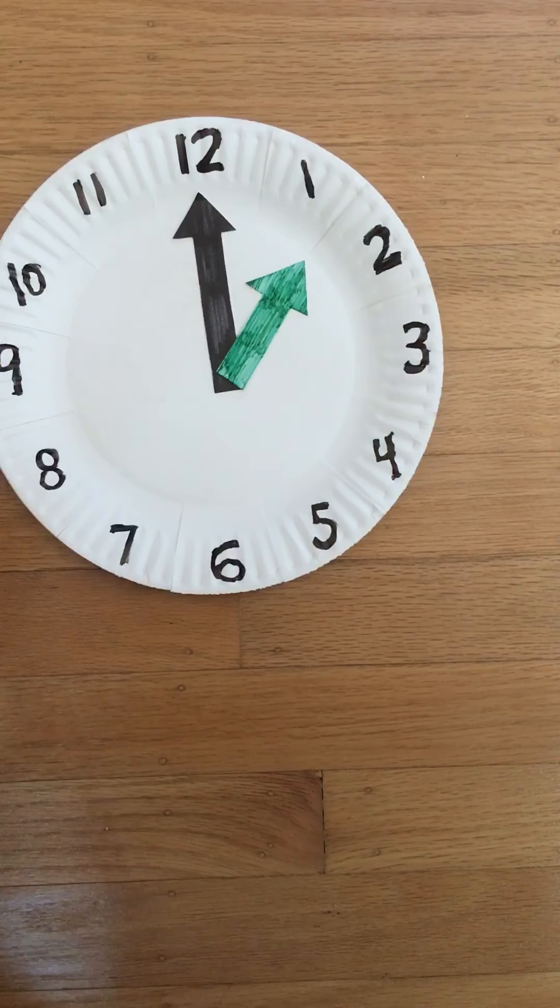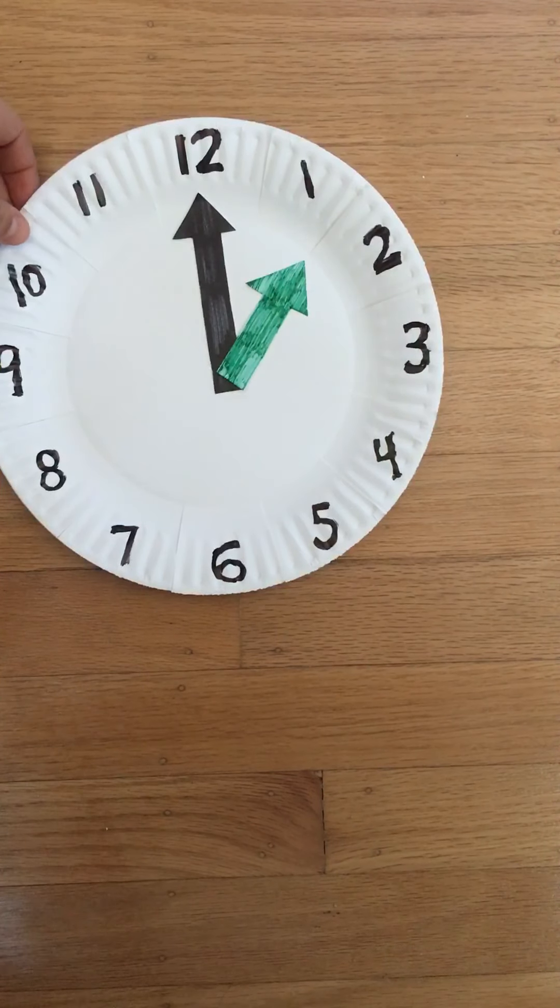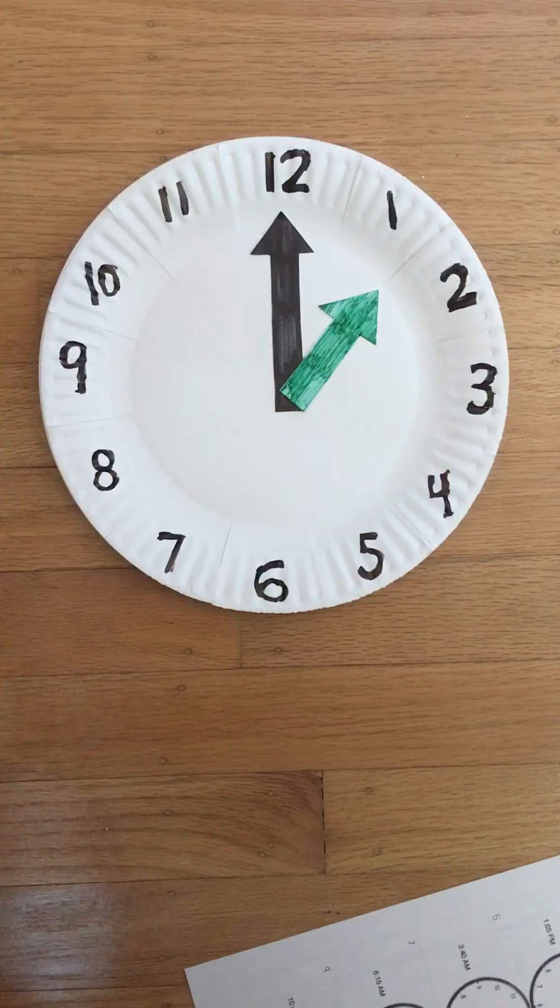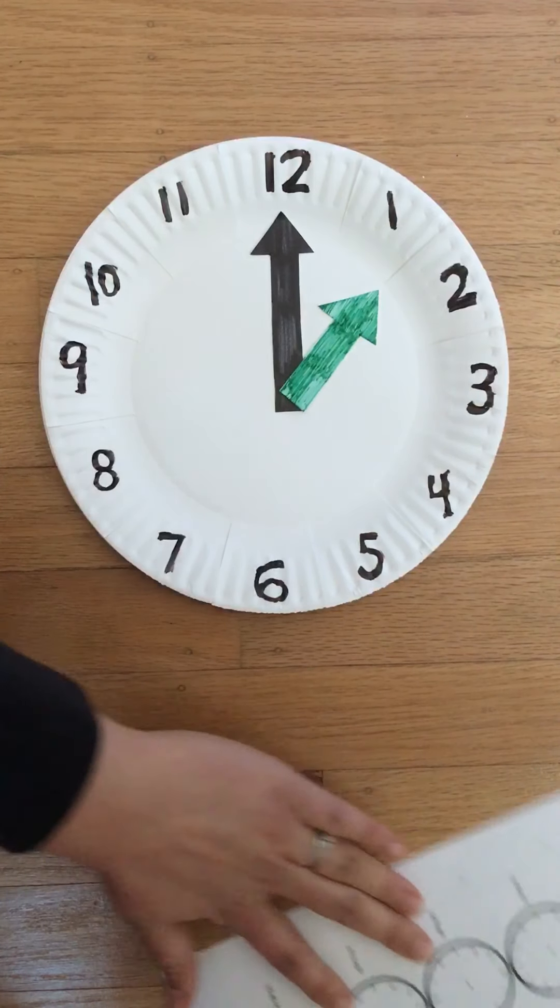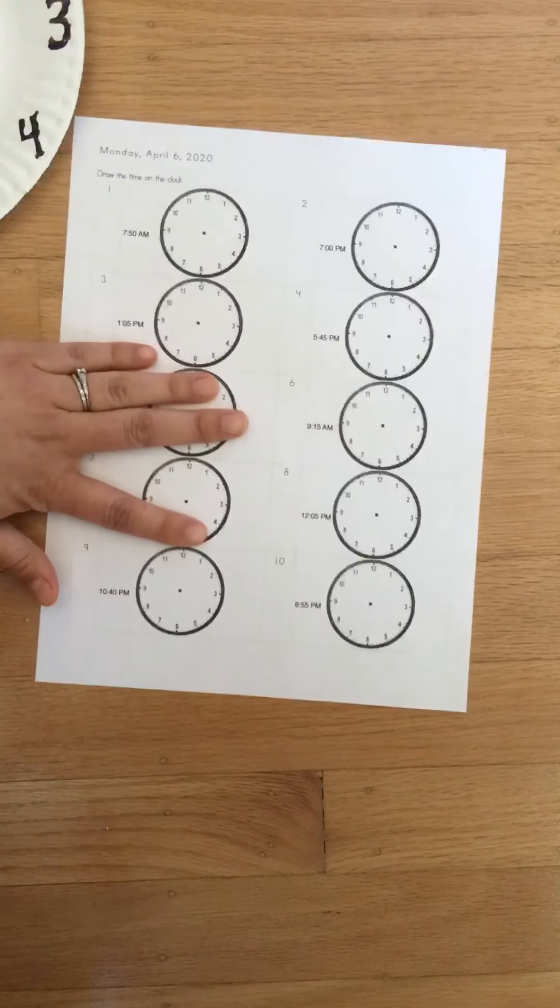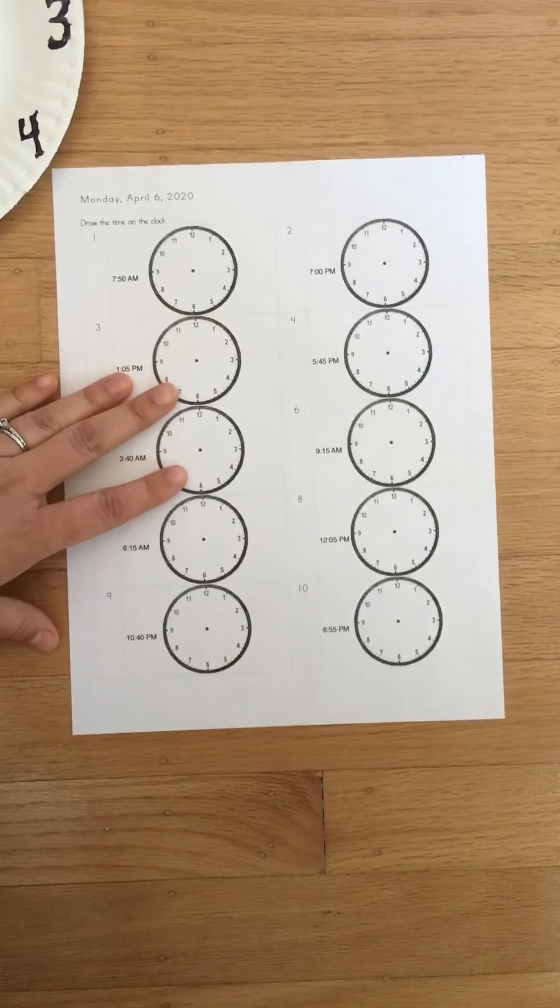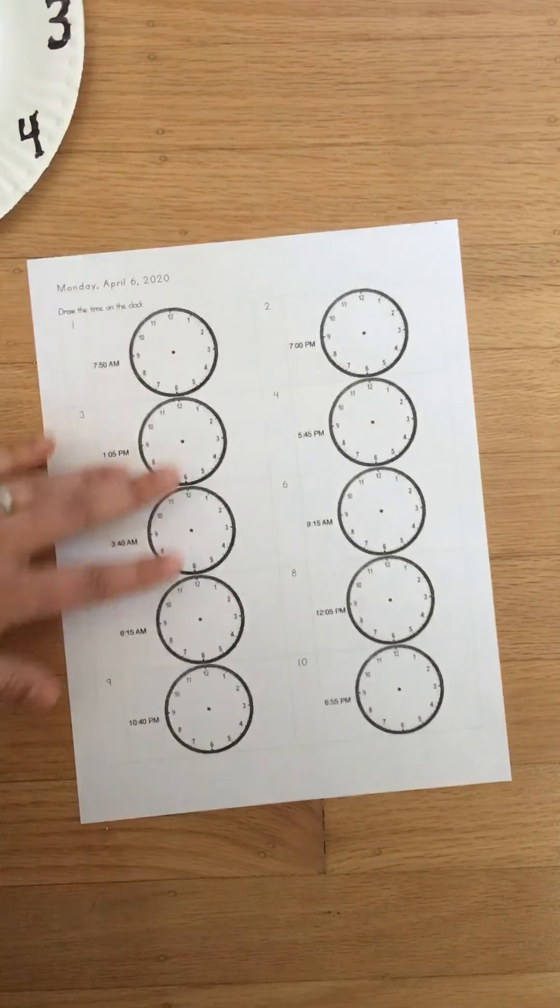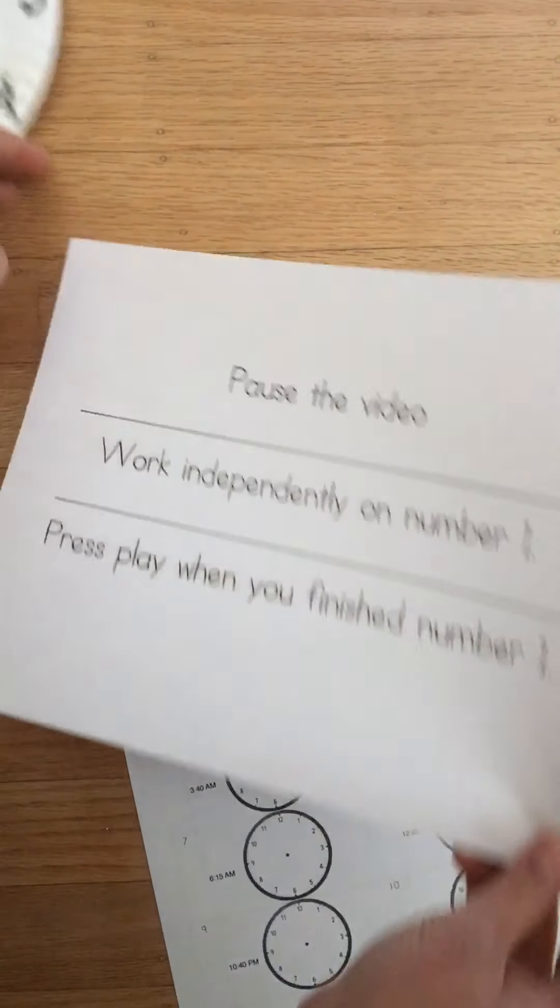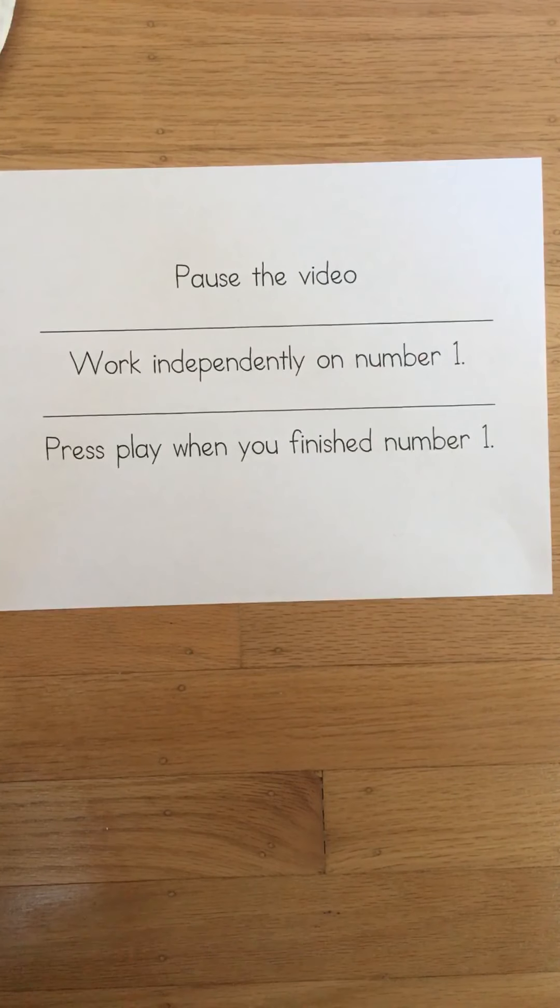Your job today is to draw the hands on some analog clocks. Now I want you to pause this video. Before you start working on this worksheet, I want you to pause this video. Work independently on problem number 1. When you're finished, I want you to press play. Go.